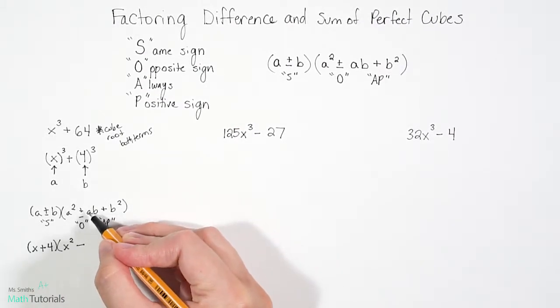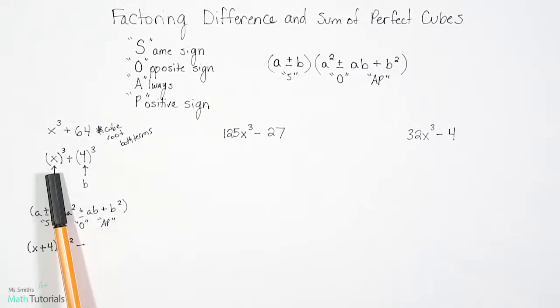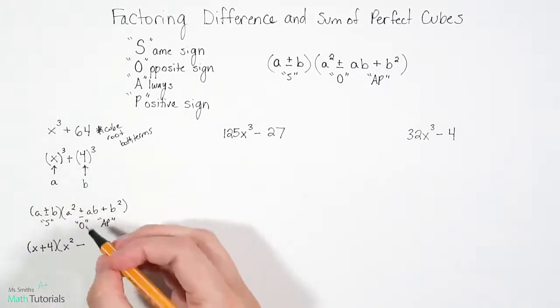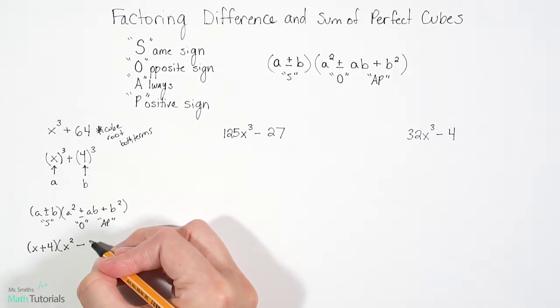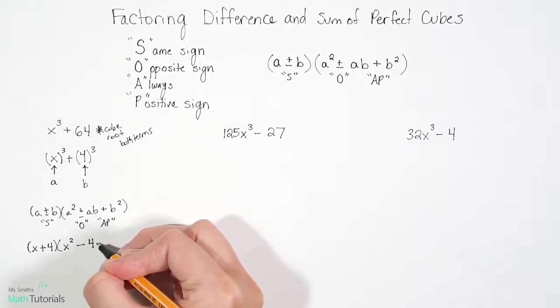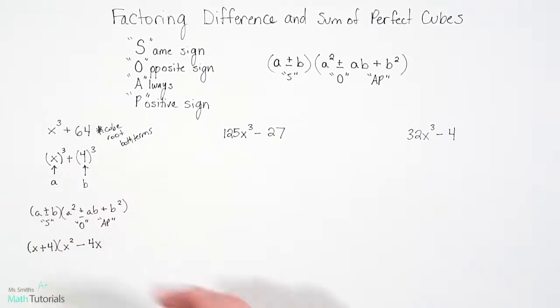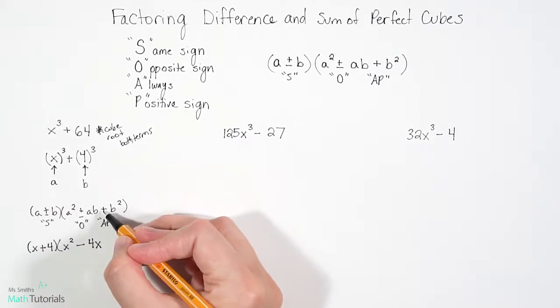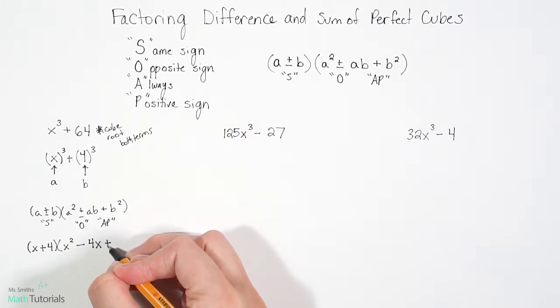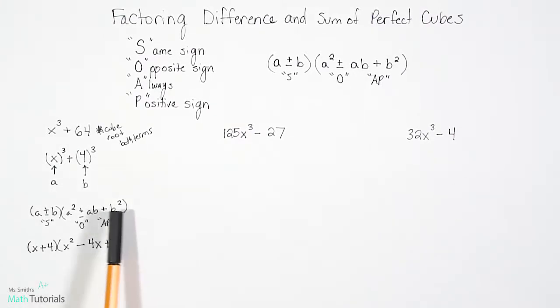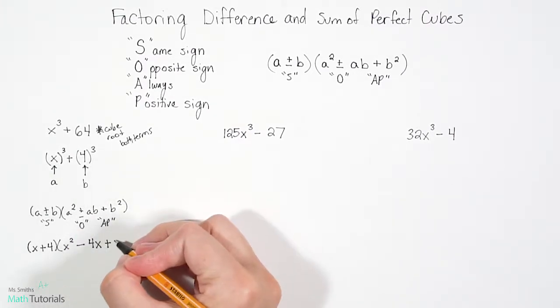The next part says a times b. So x times four. But we wouldn't write that x four, right? Math etiquette says we let the coefficient go first. So it's four times x. It's okay to flip the order there. This last sign is ap, always positive. And then b². And our b, remember, is four. So we've got four squared.